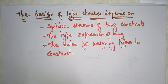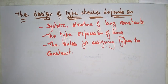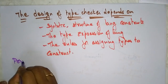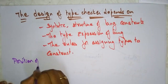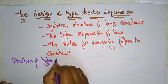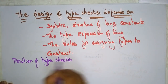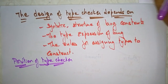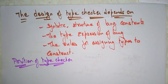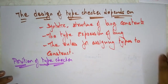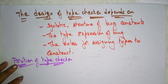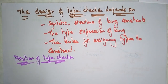Let's look at the position of the type checker in the compiler — exactly where this module will be present during compilation. The type checker is a module useful for checking the program before execution, particularly during static operations.